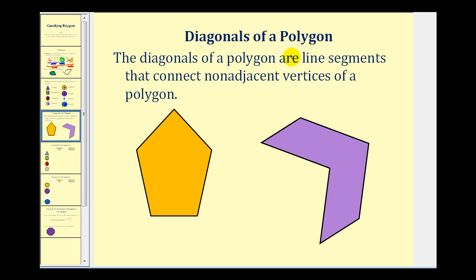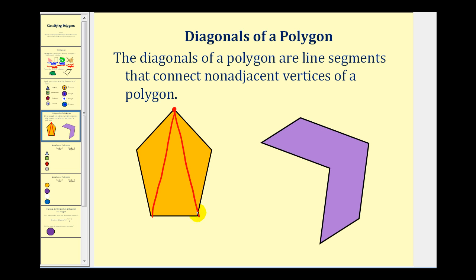We also talked about diagonals in the introductory video. The diagonals of a polygon are the line segments that connect non-adjacent vertices. The vertices are where the segments join each other — this pentagon has five vertices — and the segments making up the polygon are called edges or sides. From one vertex, the two neighboring vertices are adjacent, so diagonals connect to the remaining non-adjacent ones. For a pentagon there are two diagonals from each vertex.